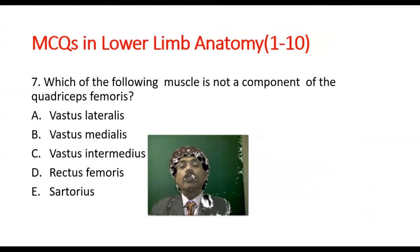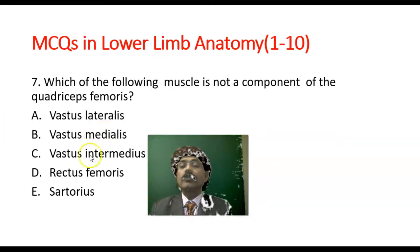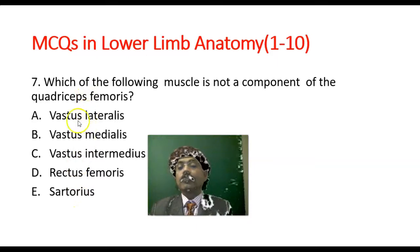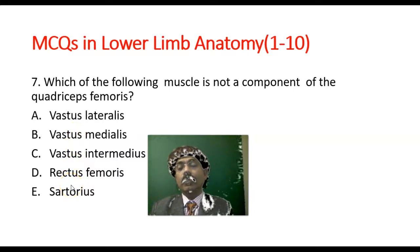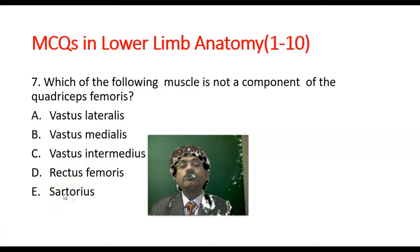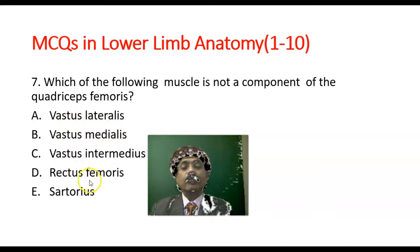Question number 7: Which of the following muscles is not a component of the quadriceps femoris? Options: vastus lateralis, vastus medialis, vastus intermedius, rectus femoris, sartorius. Quadriceps means four, so the four components are the three vastus muscles — lateralis, medialis, intermedius — and rectus femoris. Sartorius, although it lies on the anterior aspect of the thigh, runs from lateral to medial side and is not a component of the quadriceps femoris.